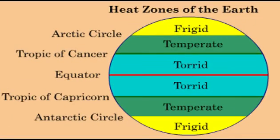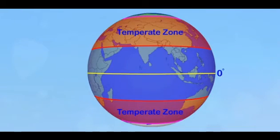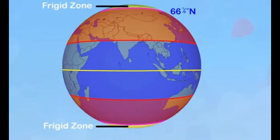Thus, the heat zones located on the globe as torrid zone 23.5 degrees north to 0 degrees to 23.5 degrees south, temperate zones 23.5 degrees north to 66.5 degrees north and 23.5 degrees south to 66.5 degrees south, frigid zones 66.5 degrees north to the north pole and 66.5 degrees south to the south pole.